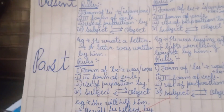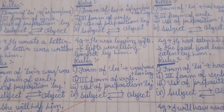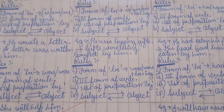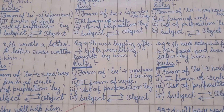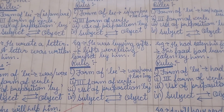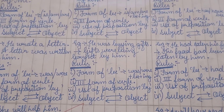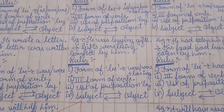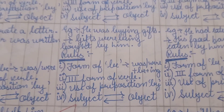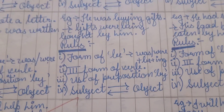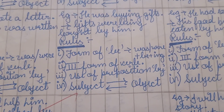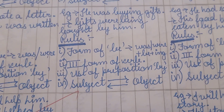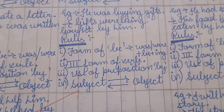Moving on to Past Continuous — because it is a continuous tense, we use 'being' with 'was' or 'were' as the form of 'be.' The example is: 'He was buying gifts.' Changing it to passive: 'Gifts were being bought by him.'